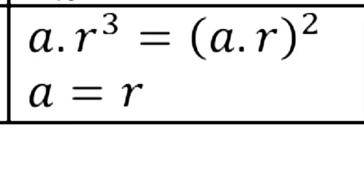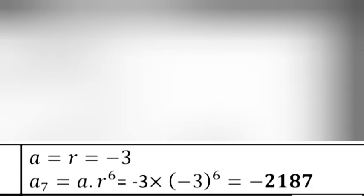Answer to part ii: ar³ = (ar)², so a = r. Since a = -3, r = -3. Therefore a7 = a × r^6 = -3 × (-3)^6 = -2187.